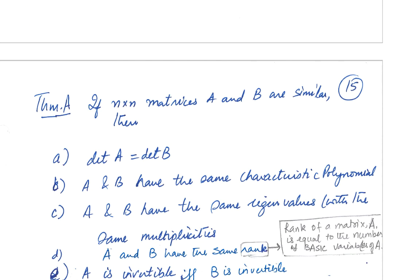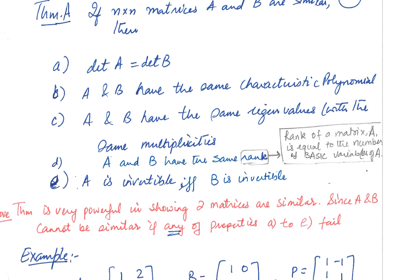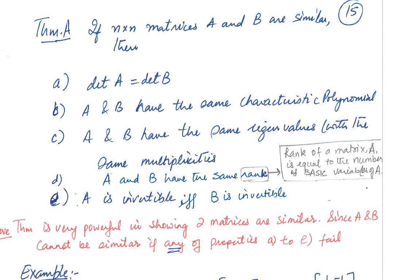Here is a very useful theorem. If two matrices A and B are similar, then all five of the following must be true: they have the same determinant, the same characteristic polynomial, the same eigenvalues with the same algebraic multiplicities, the same rank, and A is invertible if and only if B is invertible. If any one of these five fails, the matrices are not similar — this is very powerful for disproving similarity.